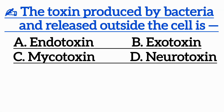Question 14: The toxins produced by bacteria and released outside the cell are — Option A: Endotoxin, Option B: Exotoxin, Option C: Mycotoxin, Option D: Neurotoxin.